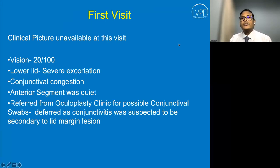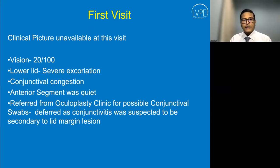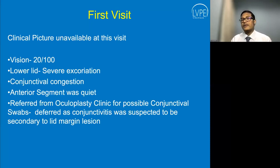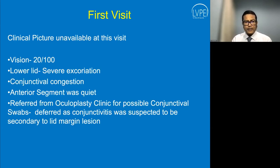A viewer asked how 50% keratitis from microsporidia and 50% from fungus compares to non-COVID patients. In the Indian context, we typically see bacterial and fungal keratitis primarily — it is a hot, humid, tropical climate. Microsporidia has a seasonal variation but is not as common as fungal keratitis. There are also very typical unusual fungal keratitis cases noted in this series, which will be discussed as the talk proceeds.